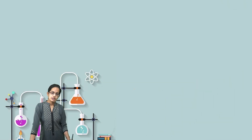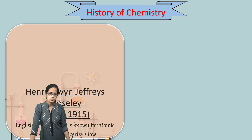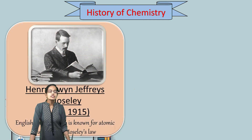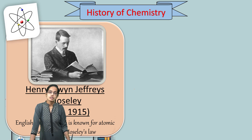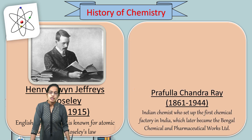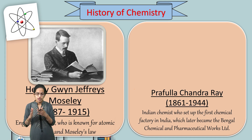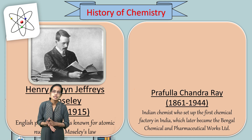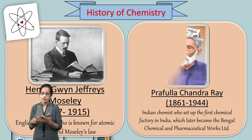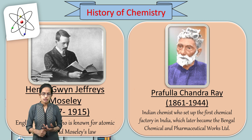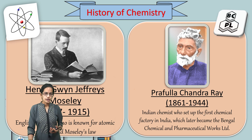From India and globally, there are more important discoveries. Moseley was an English physicist who gave the concept of atomic number. From India, Prafulla Chandra Ray talked about the establishment of a chemical factory in India, later known as Bengal Chemical and Pharmaceutical Works Limited.